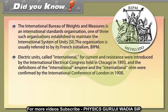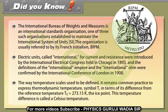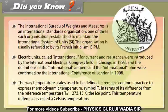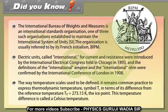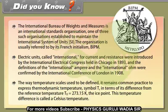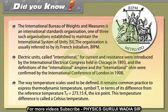The way temperature scales used to be defined, it remains common practice to express thermodynamic temperature called T in terms of its difference from the reference temperature T zero equals 273.15 Kelvin, the ice point. This temperature difference is called a Celsius temperature.